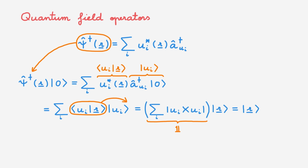So what does this mean? The action of the creation field operator on the vacuum state creates a particle localized at position r. This is exactly what we expect for a creation operator in a given basis.